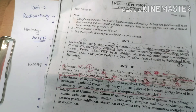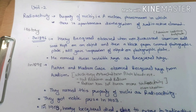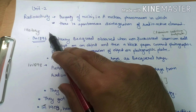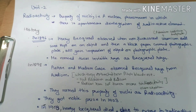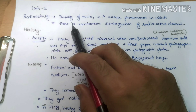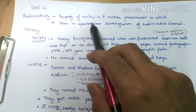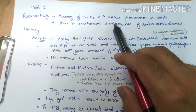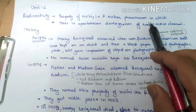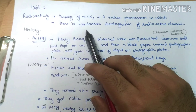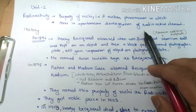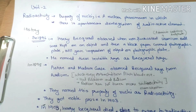There is a strange activity of the nucleus which was discovered, called radioactivity. Radioactivity is the property of the nucleus — a nuclear phenomenon in which there is a spontaneous disintegration of a radioactive element.